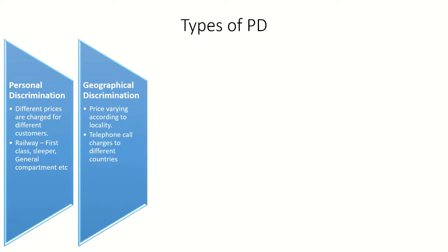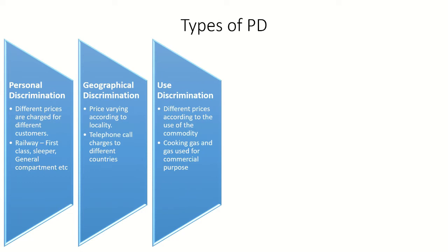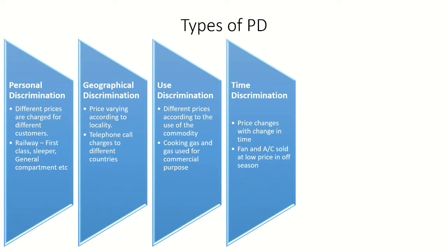The second type is geographical discrimination, where prices vary according to locality or geographical area. For example, telephone calls to America cost more than calls to Bhutan or Nagaland. Use discrimination means different prices are charged based on the use of the product — for example, cooking gas for household use costs less than cooking gas for commercial purposes.